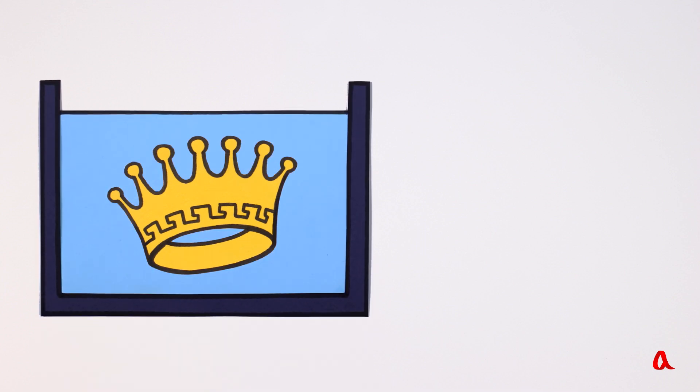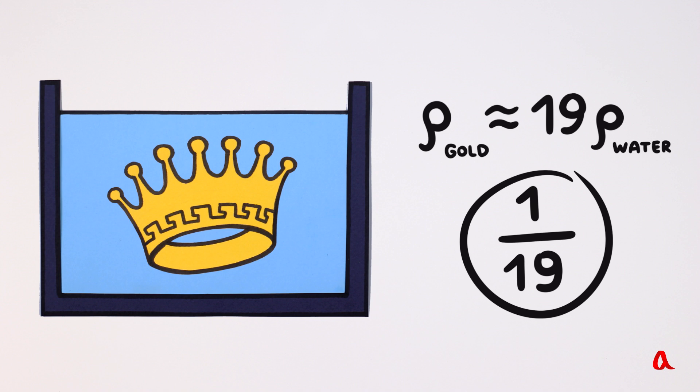Let's weigh the crown up in the air and then immerse it in water and weigh it again. Thus we will find out what the loss of weight is. The density of gold is 19 times greater than that of water. So if the crown is made of pure gold, it will lose 1 19th of its weight in water.